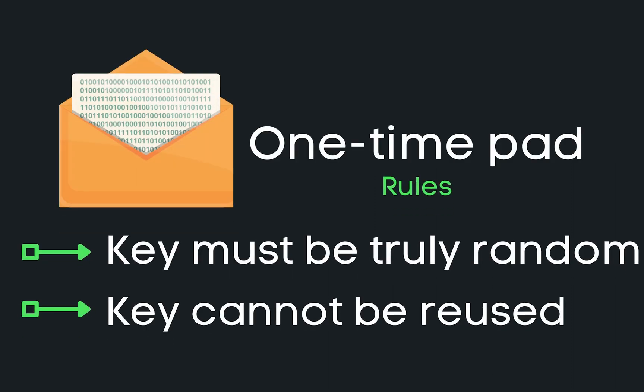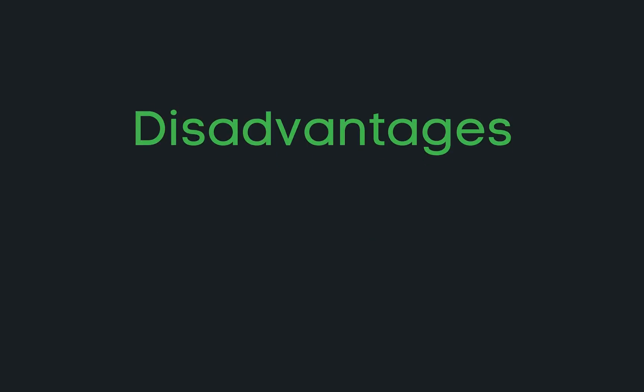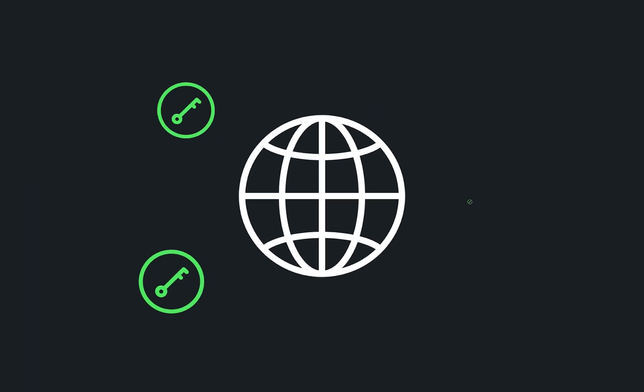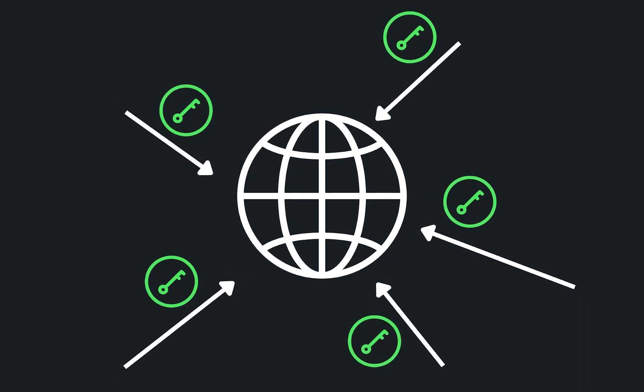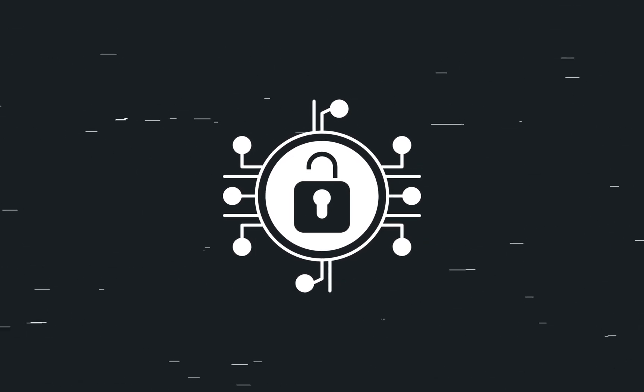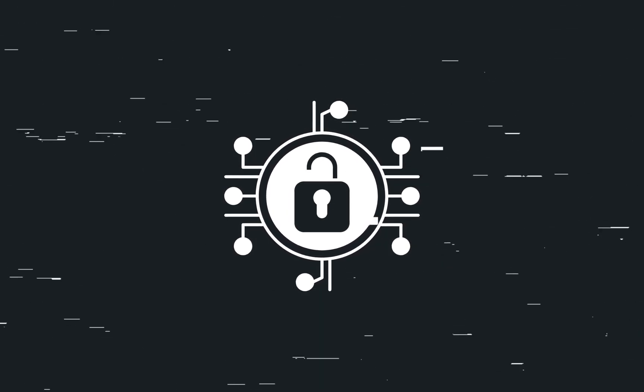If implemented correctly, one-time pads are a very strong crypto system. However, they aren't the solution to secure information transfer. Some of the disadvantages are that the key must be as large as the message we want to send, and then we also have to distribute that potentially massive key to all the recipients of our message. If we want to communicate with everyone on the internet, then all of them would have to have our key and we would have to have everyone else's. The one-time pad is a crypto system that guarantees security, but it isn't the answer to the toughest challenges facing modern cryptography.